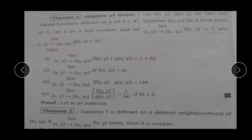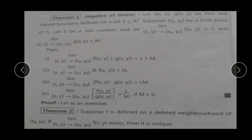आप लोग already previous lecture में limit point की definition पढ़ चुके हो. So यहाँ पर x₀, y₀ limit point है. Let k be a real number, and let limit of f(x,y) as (x,y) → (x₀, y₀) equal to L, and limit of g(x,y) as (x,y) → (x₀, y₀) equal to M. यहाँ पर हमारे function f की limit exist हो रही है और वो equal है capital L के, and similarly limit of g equal है capital M के.